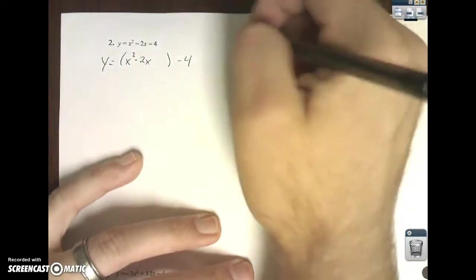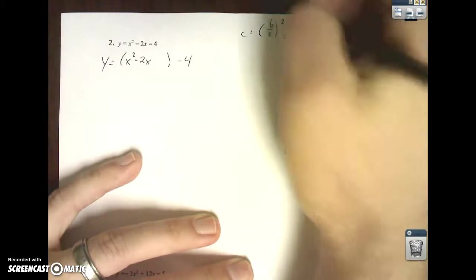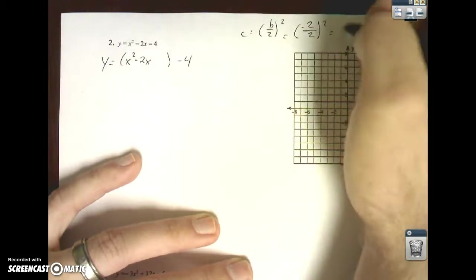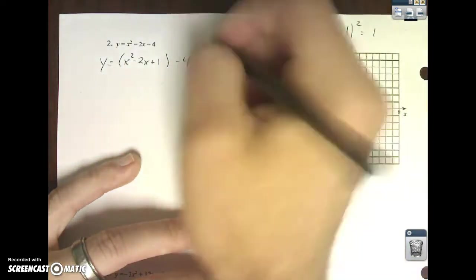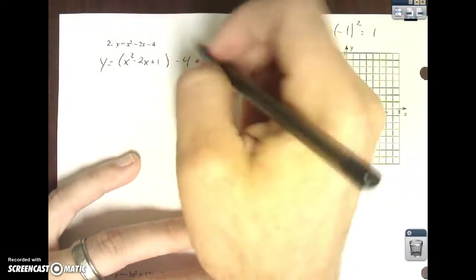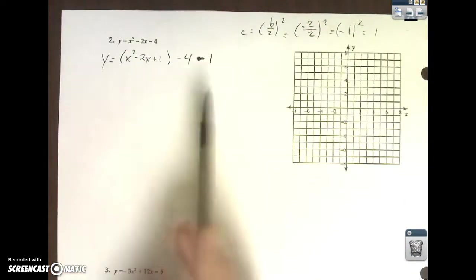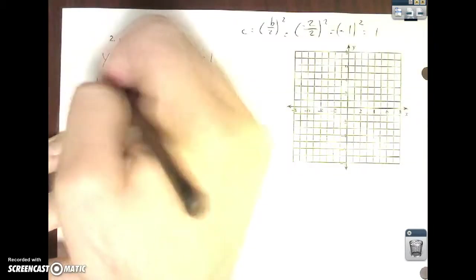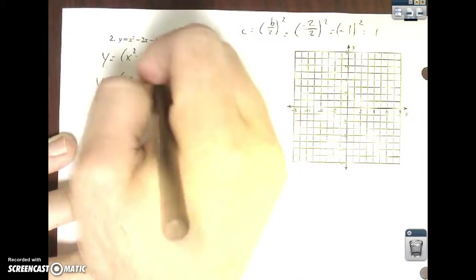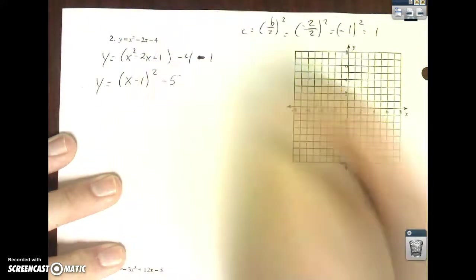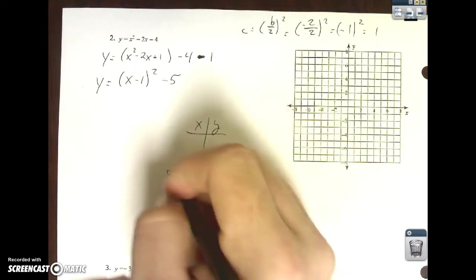Same idea. Now, C equals B divided by 2 to the quantity squared. And then, your B is negative 2. Negative 2 divided by 2 is negative 1. And negative 1 squared gives me 1. So, I can do plus 1. And then, on the outside, if I add 1 on the inside, on the outside, I have to subtract 1. It's totally a minus sign. Because, again, I'm trying to maintain my equality. So, y equals, inside the parentheses, the last thing inside the parentheses before I squared it was negative 1. So, I have x minus 1, the quantity squared. Negative 4 minus 1 is negative 5. Very good.